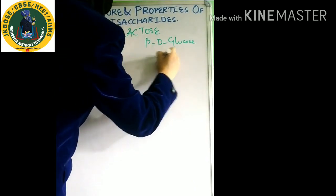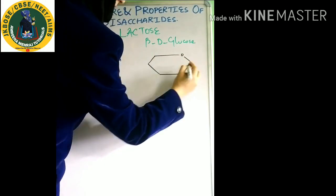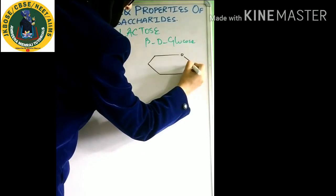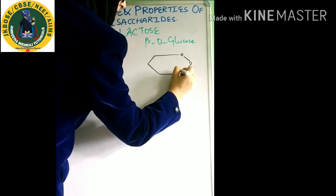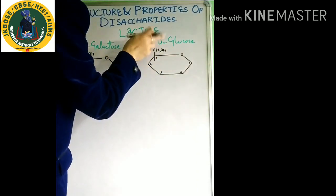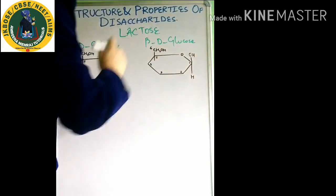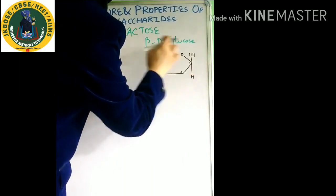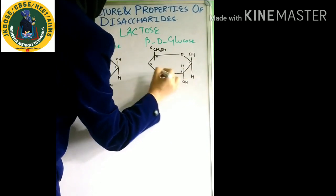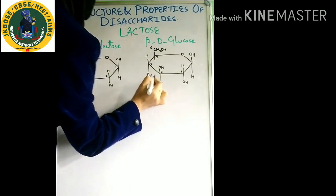Now beta-D-glucose — again a six-membered ring. Carbon number 1, 2, 3, 4, 5, and over here carbon number 6 with CH₂OH on the top because it's D-glucose. Beta because at carbon number 1 it will be OH on the top, making this D-glucose beta-conformation because OH on carbon number 1 is in the same direction as CH₂OH — both are on the top. At carbon number 2 you have H and OH, same as alpha-D-glucose. At carbon number 3, OH and H. At carbon number 4, H and OH. This completes your beta-D-glucose.